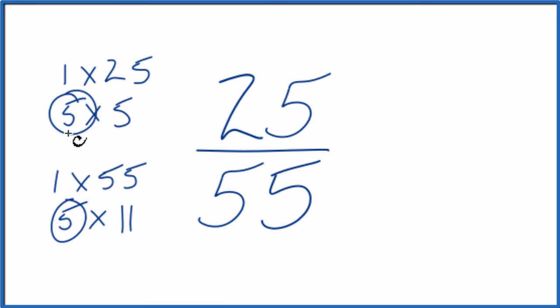So 25 divided by 5, that equals 5 and then 55 divided by 5, that equals 11. So we've simplified 25/55 down to 5/11 and we can't reduce or simplify this any further. These are equivalent fractions.